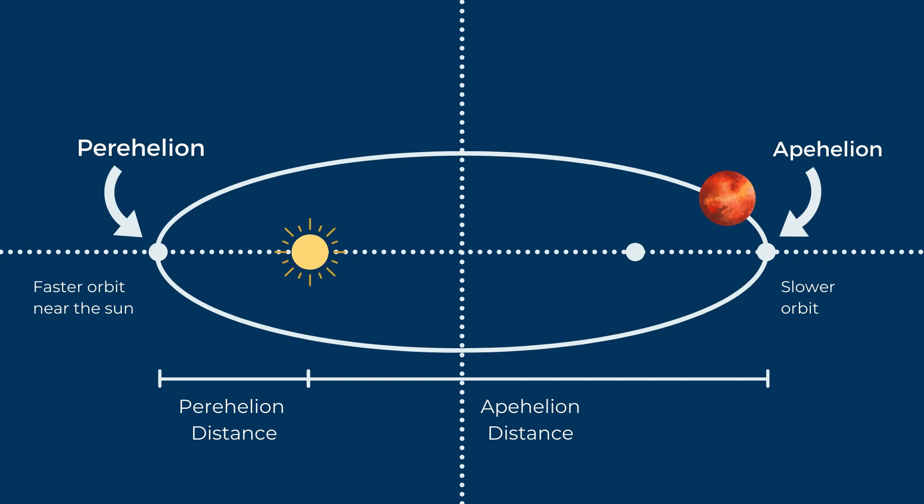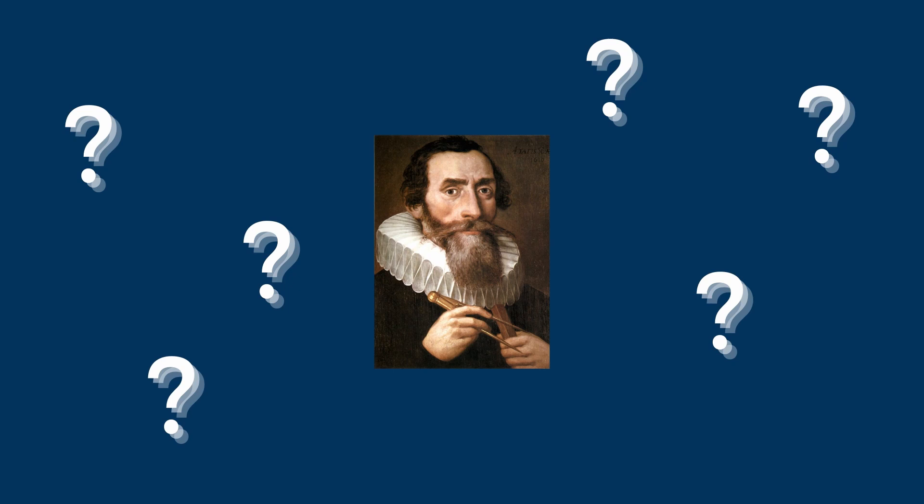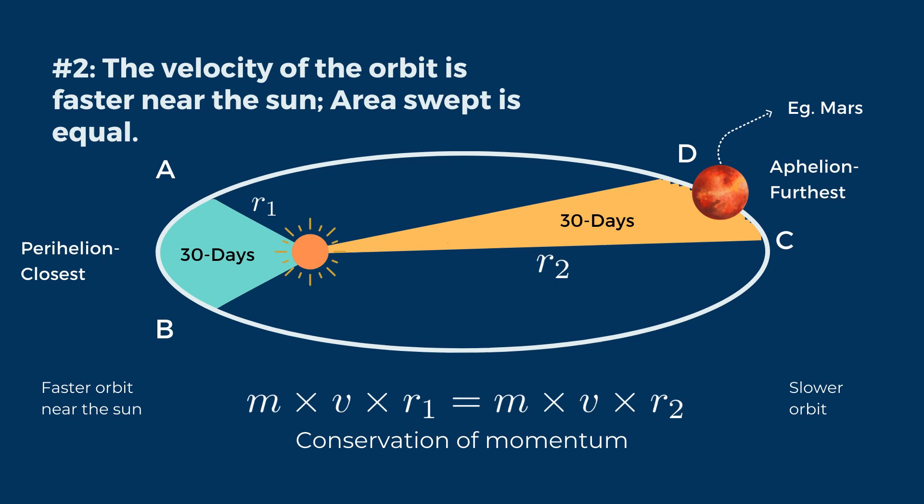Kepler only came to this conclusion after figuring out his second law, which says that if you draw a line from the Sun to Mars, for example, and wait a fixed amount of time, say 30 days, that line will sweep up a certain area as Mars moves along its orbit. What Kepler noticed was that each area is exactly the same no matter where in the orbit. So if Mars is approaching perihelion, it's travelling faster than it is at aphelion. At perihelion, closest to the Sun, the line connecting Mars to the Sun is very short, but because the planet is moving so fast, it covers a lot of distance.